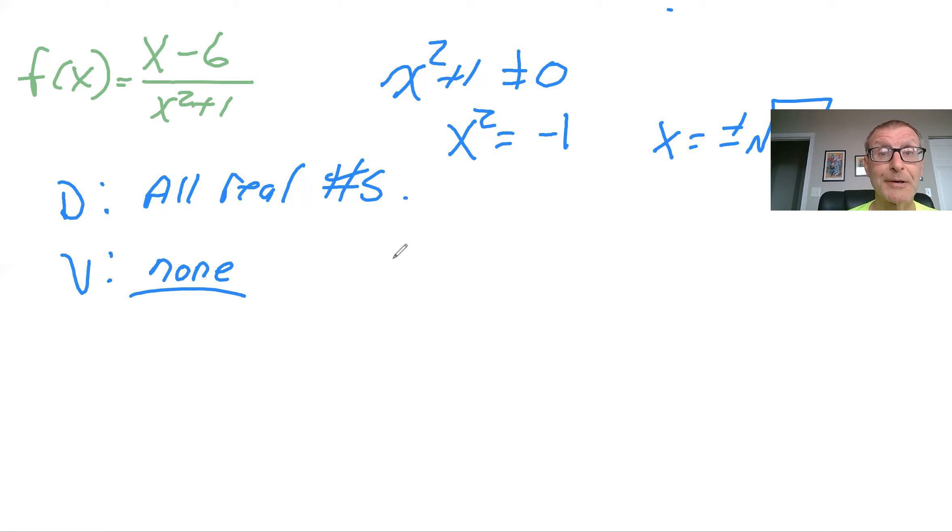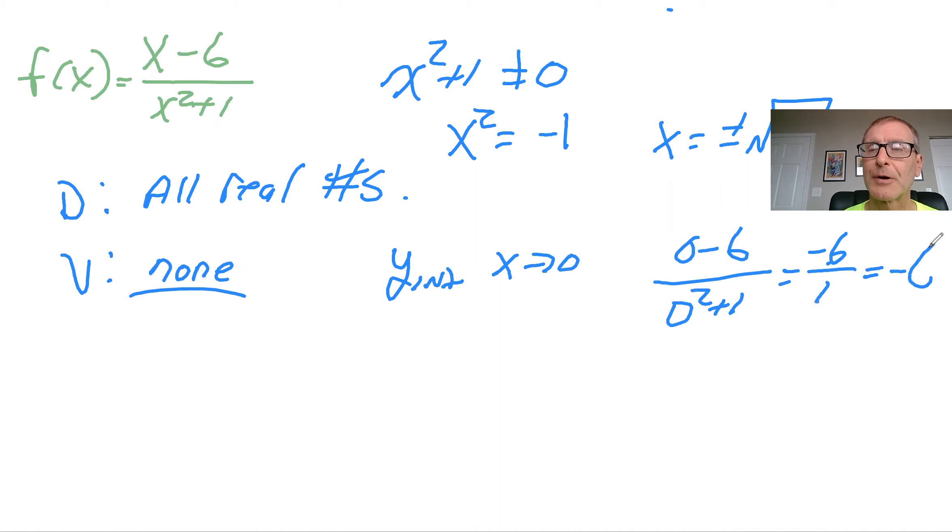Okay, so let's do our intercepts, see what they are. So again, the Y-intercept is when X equals 0. So it'd be 0 minus 6 over 0 squared plus 1. And so you get minus 6 over 1. And so the Y-intercept is minus 6. So that would be 0 minus 6.